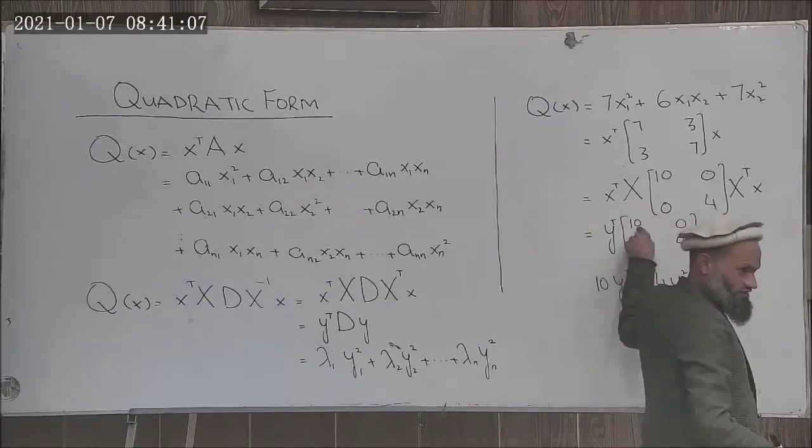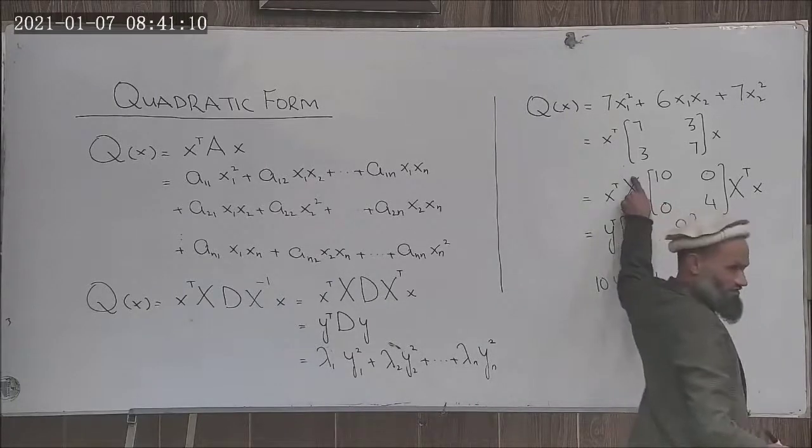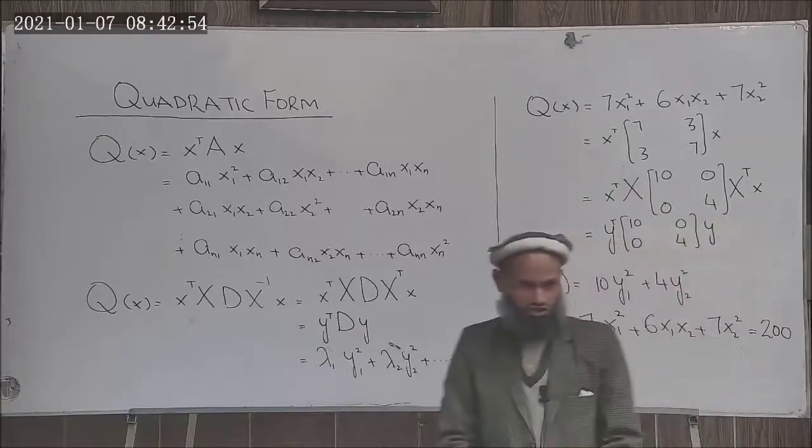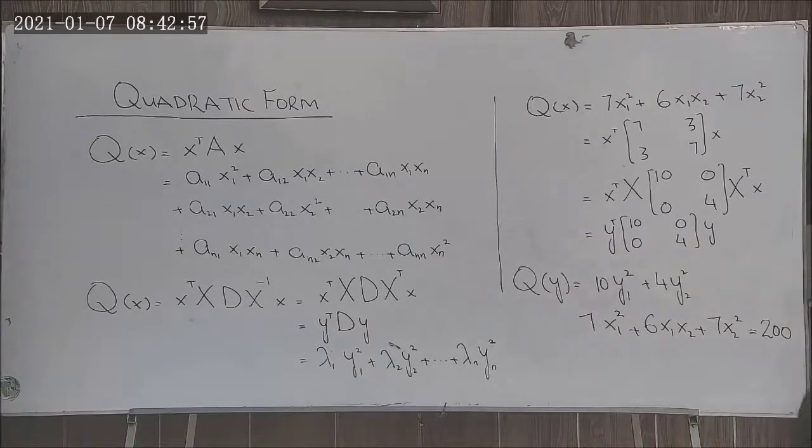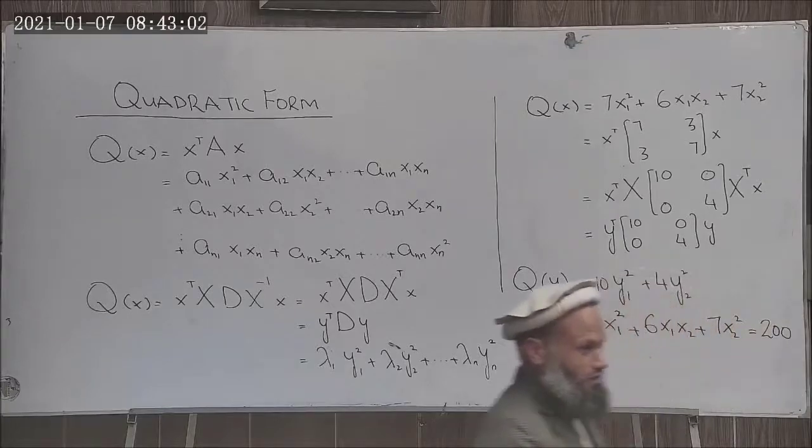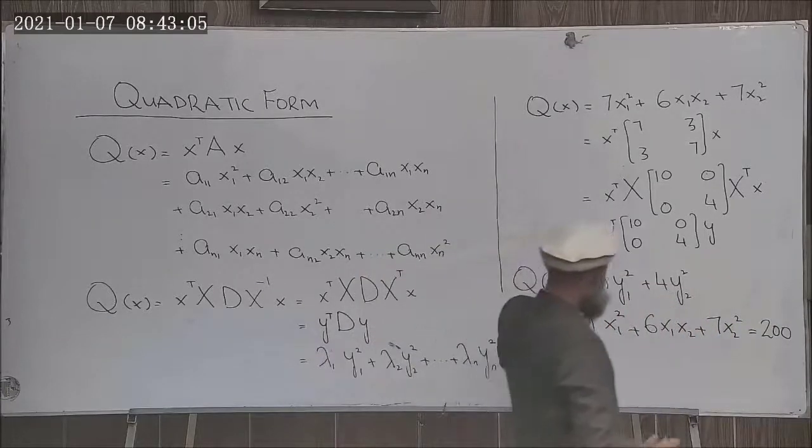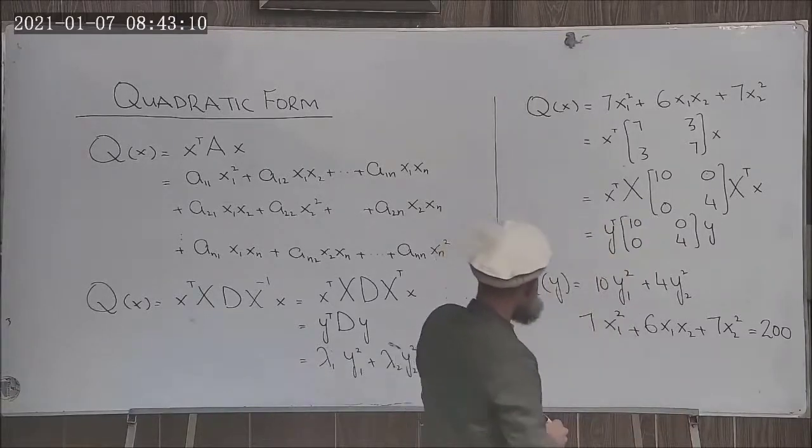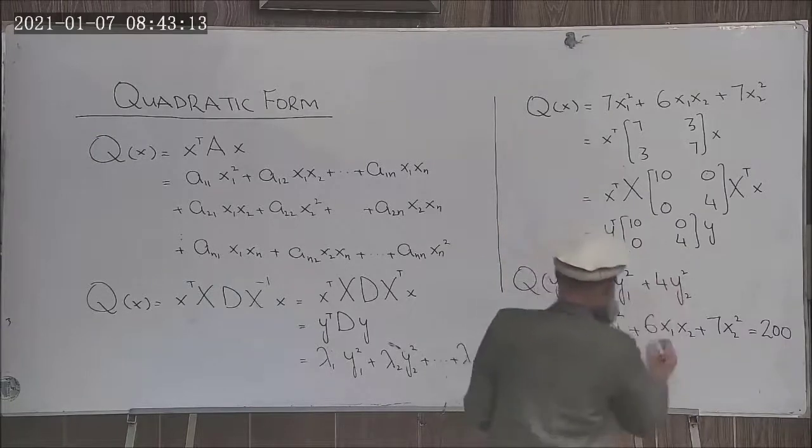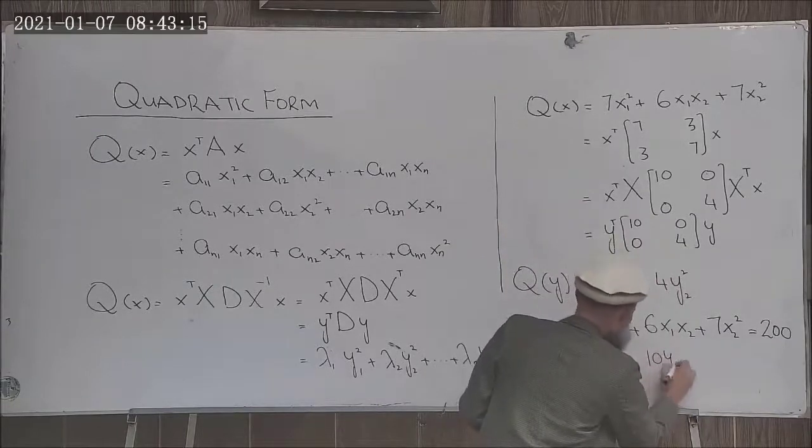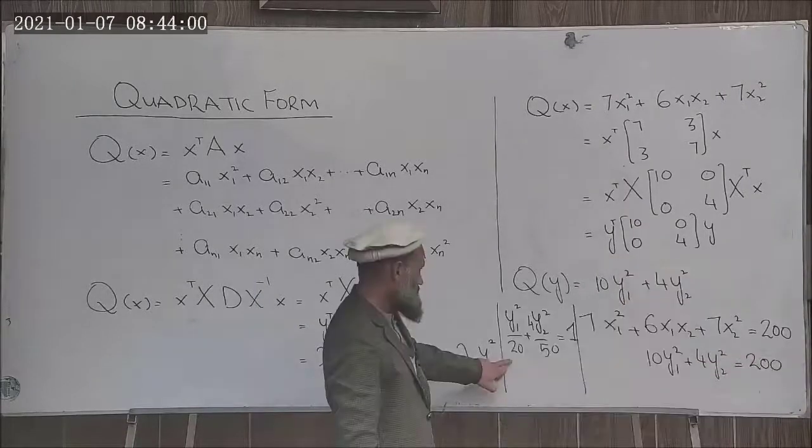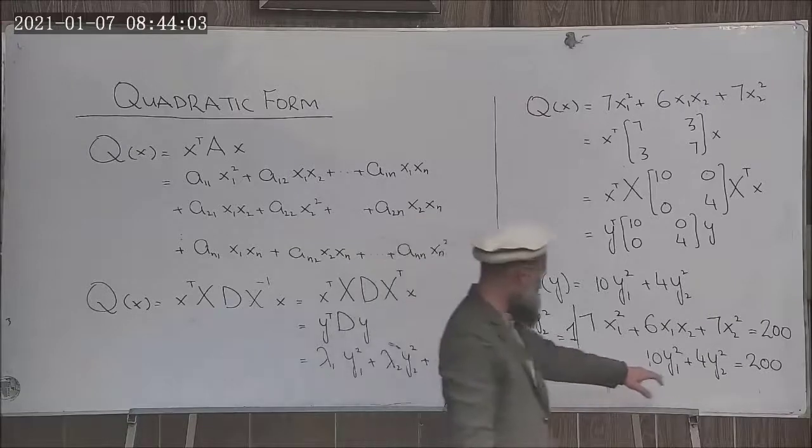Definitely here the order of this will be the same as order of columns in this matrix. So the first column in this matrix X will correspond to this first eigenvalue, the second column in this matrix X will correspond to the second eigenvalue. What is the geometrical shape that is described by this quadratic equation? We can see that this left hand side by using the transformation, the new transformation is equal to 10 y1 square plus 4 y2 square.